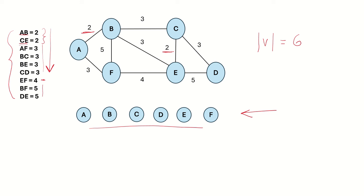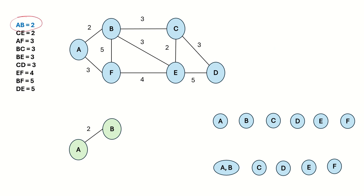We take the first edge in the sorted list, which is edge AB. We check the representative sets of vertices A and B. We see that they are not equal — they are disjoint sets — so we can add this edge to our MST. We add edge AB to the MST and then take a union of these two representative sets.